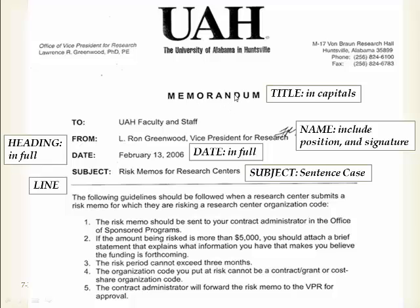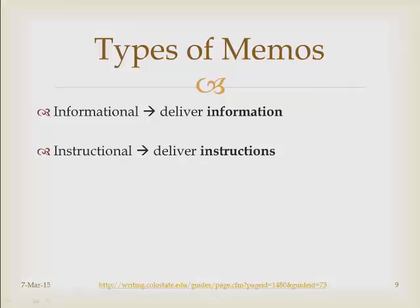There are two different types of memos. One is informational because it delivers information — for example, an upcoming meeting, seminar, or changes in policies or pricing. The other is instructional because it delivers instructions — here is a problem, and these are the solutions and actions needed to solve it. So two types: informational and instructional.